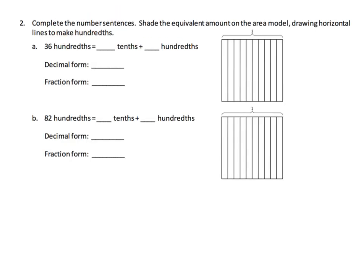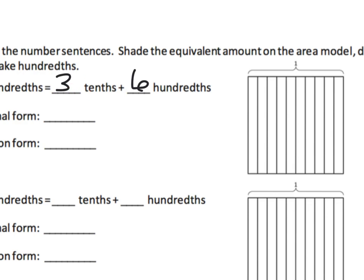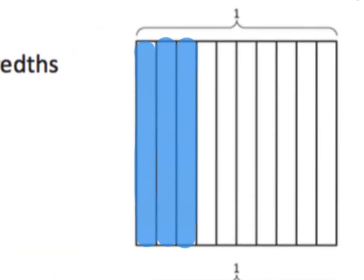Now we're going to complete number sentences and shade the equivalent amount on the area model. We need to draw some horizontal lines to create hundredths. For thirty-six hundredths, we want students to recognize that is three tenths plus an extra six hundredths. First, I shade three tenths: one tenth, two tenths, three tenths. For the six hundredths, I take that next tenth and chop it into ten pieces — cutting it in half and then one, two, three, four, five on each side.